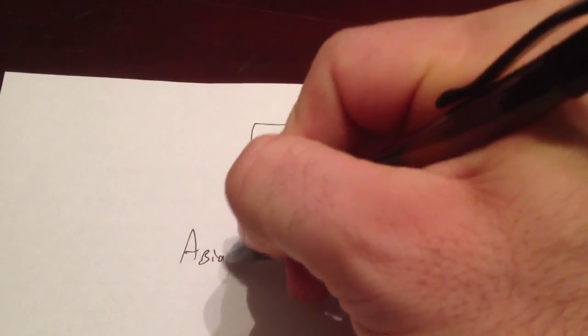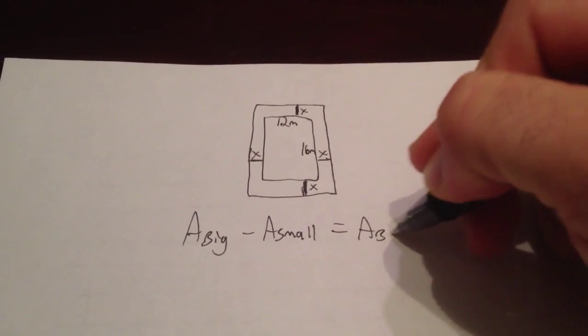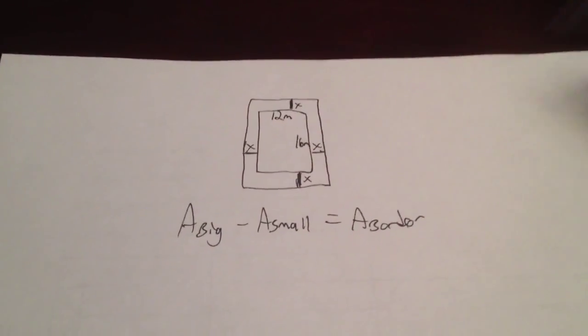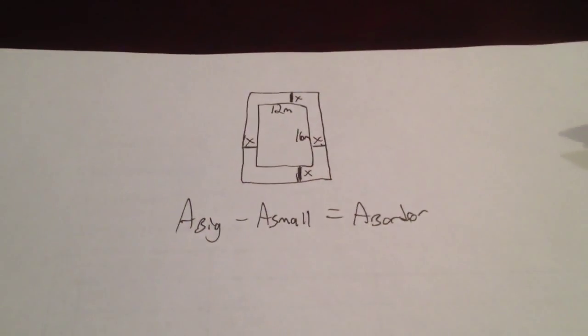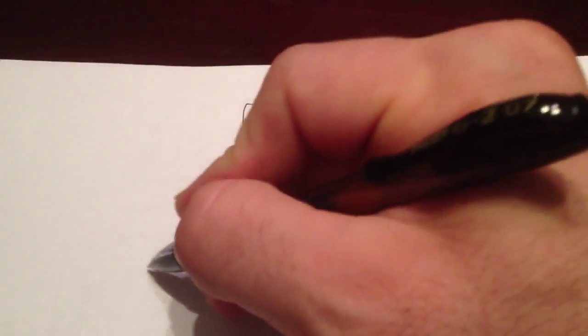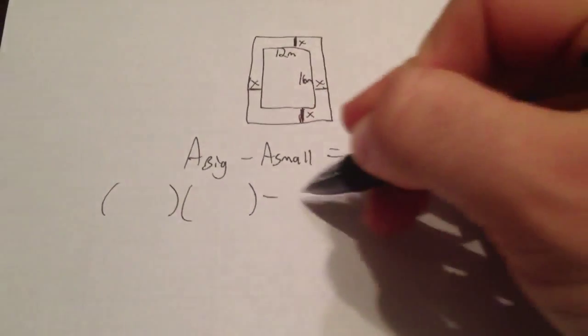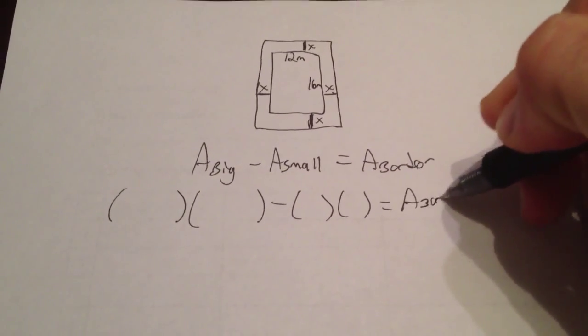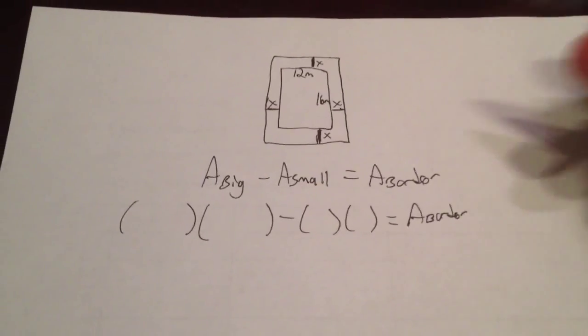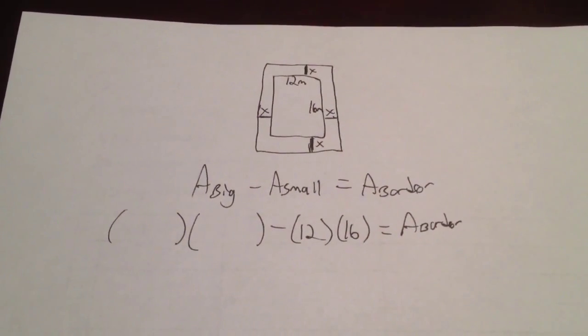What I showed you guys in class is I gave you a little formula. I said the area of the big minus the area of the small is equal to the area of the border. The area of our big shape is going to be length times width, the area of our small shape is also going to be length times width. We'll start off with our small shape, it's pretty easy here. Our small shape is 12 by 16 so we just take 12 times 16 for our small shape.